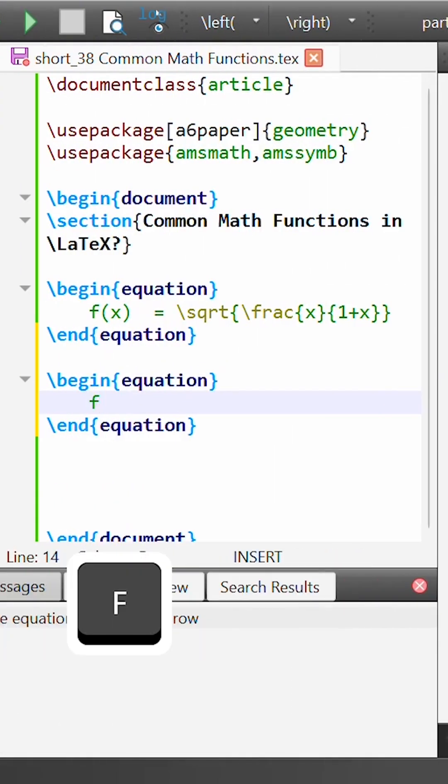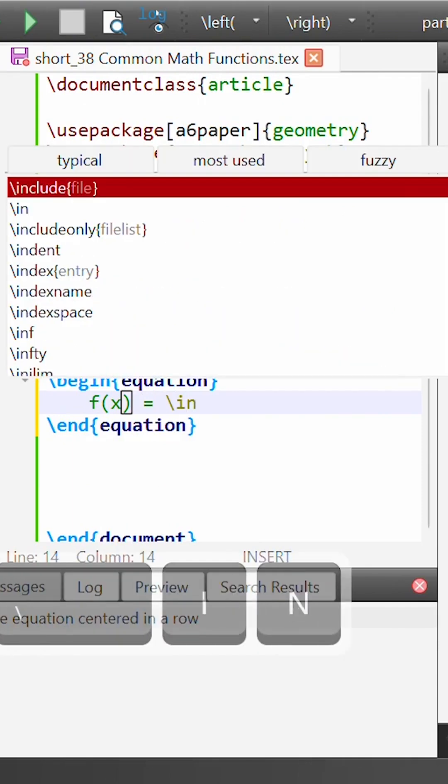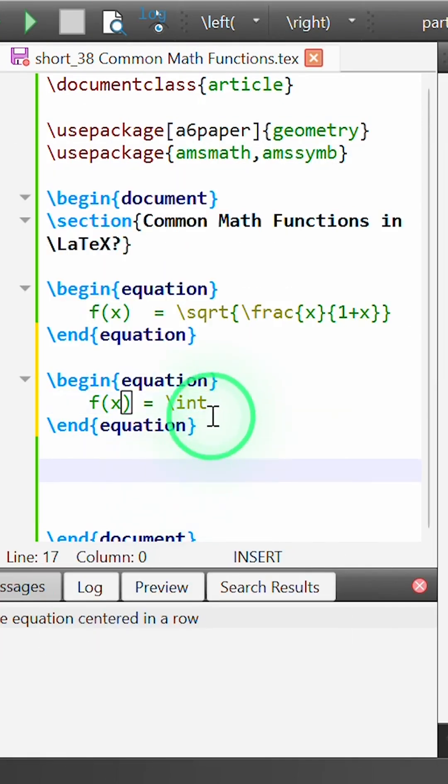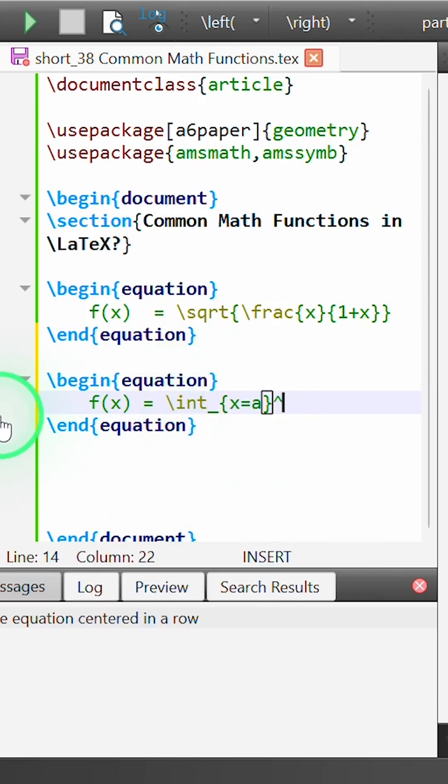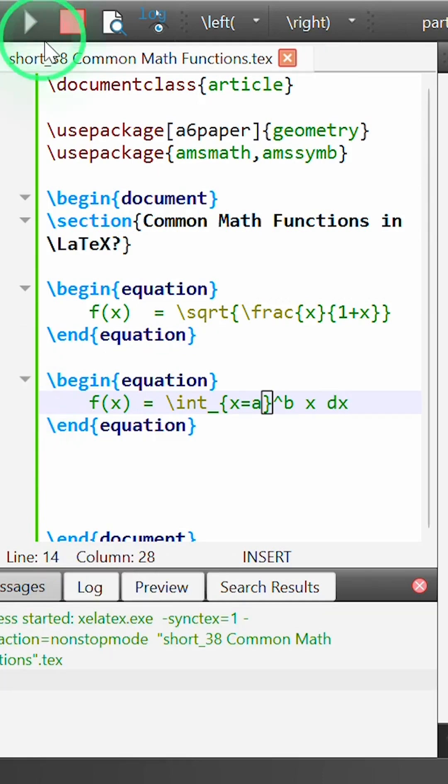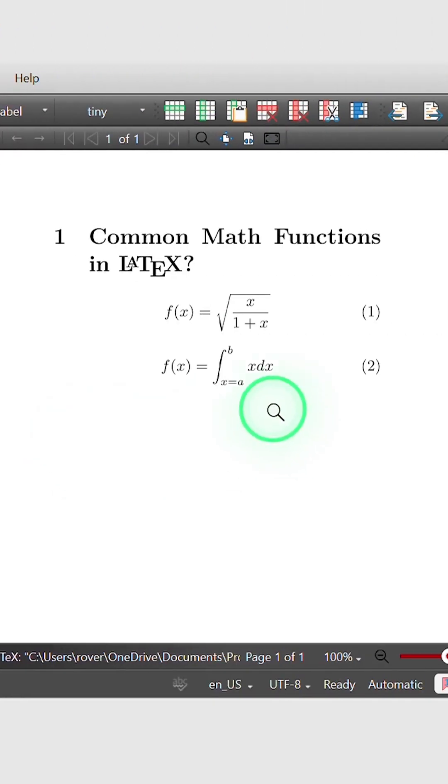As well as writing square roots, it's also possible to write functions with integrals. Suppose we write f of x equal to the integral, and I can use the command \int to write the integral symbol. Let's say it's between the limits of x equals a and b, and the function is just the term x, then I'll complete this with dx. So if we build this,